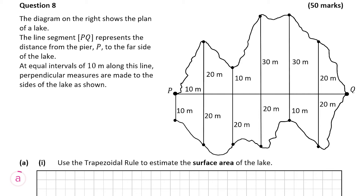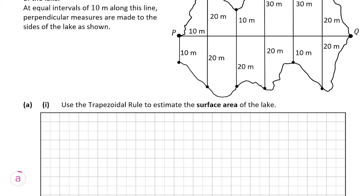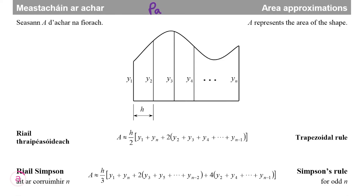Part a(i) is worth 15 marks and we have to use the trapezoidal rule to estimate the surface area of the lake. The trapezoidal rule is in our formula and tables book on page 12. I always recommend going back to the tables book just to make sure you have it correct, as it's long enough and there are one or two things you might forget.